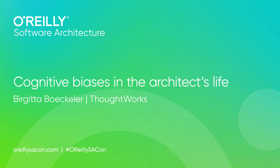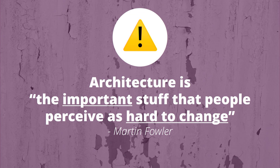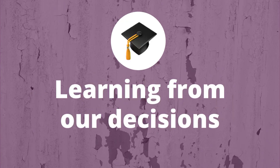Because architecture is the important stuff that's often hard to change. And while we maybe don't have to be so vigilant about cognitive biases in every little thing that we do every day, whenever we're making a big decision that is potentially hard to change, then we especially want to take a step back and be aware of what might be going on. And if we constantly assume that we're being totally rational, then that can prevent us from learning from our decisions.